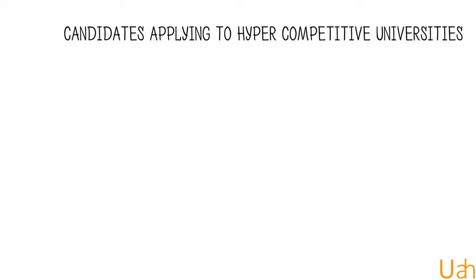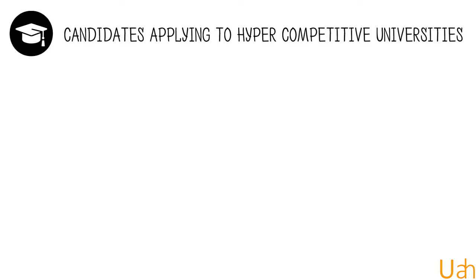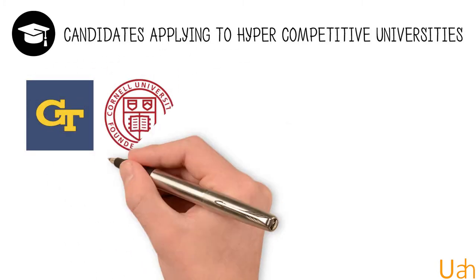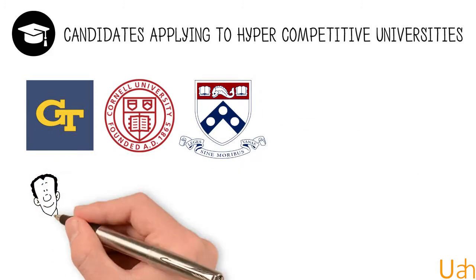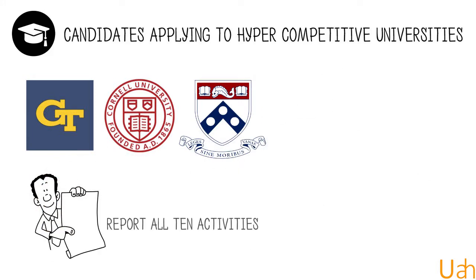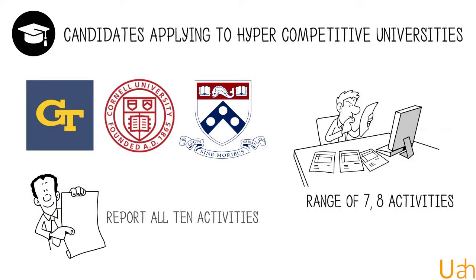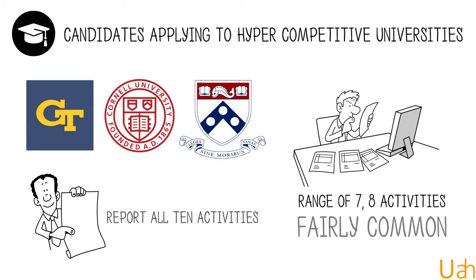Although candidates applying to hyper-competitive universities like Georgia Tech, Cornell, UPenn, etc., report all 10 activities, the range of 7 to 8 activities is fairly common.